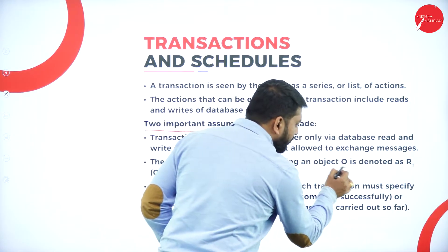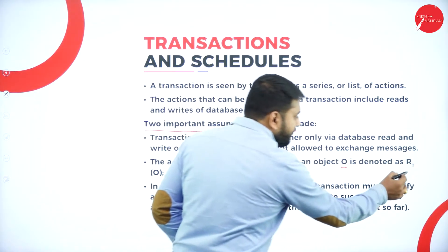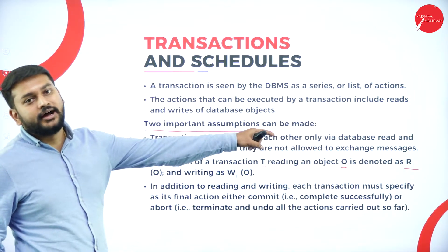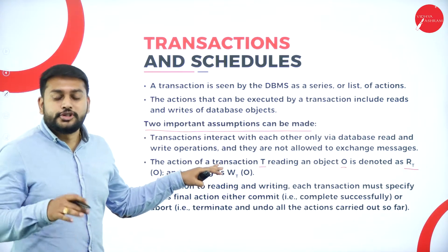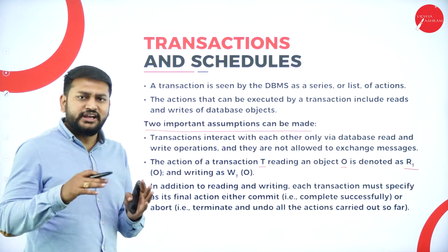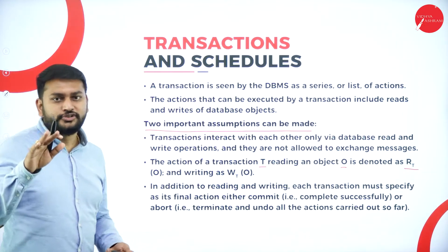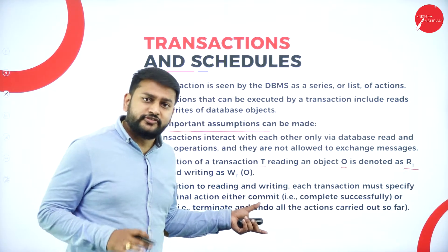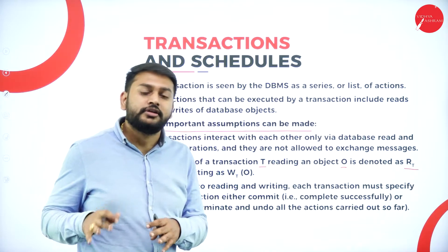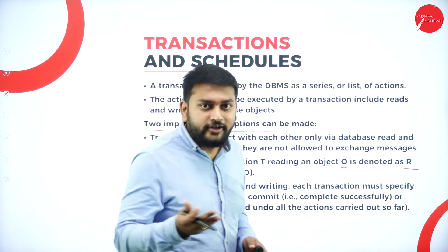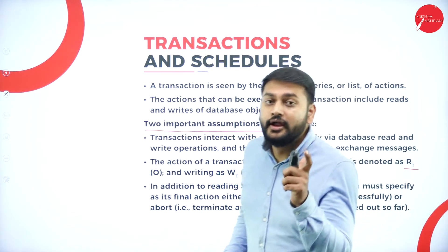Reading an object O — if I call it as an object, I will be representing that as O. If I'm reading anything, I will be mentioning that as R subscript T. If I'm writing anything, W subscript T is what you need to remember. I also have to mention the state of the transaction — if it is completed successfully, I should mention it as commit, or if it is aborted, I should mention that at the end of the transaction.